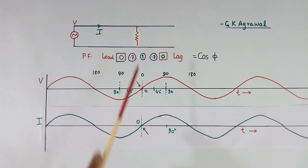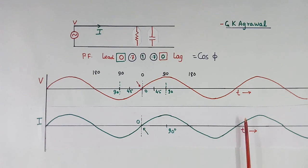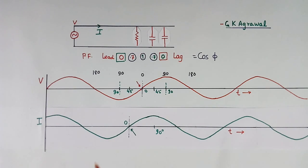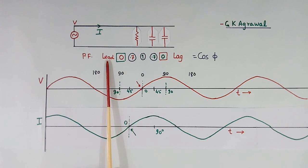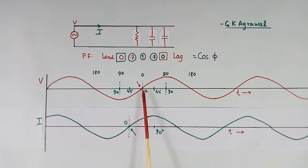Now here again the load is resistive, so both zero crossings are matching at the same time. Suppose we put a capacitor here. In case of an inductor, this current was shifting to the right side, but in the case of a capacitor, current will shift to the left side. If we put some more capacitor, then this current will shift further left. Now the angle between this zero crossing and this zero crossing is 45 degrees. So cos 45 is 0.7, and power factor is 0.7 — but leading. Why leading? Because current is leading. If we start from here, the current zero crossing will come first and the voltage zero crossing will come later. So current is leading, so power factor is leading.